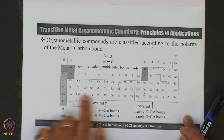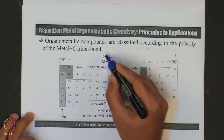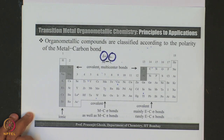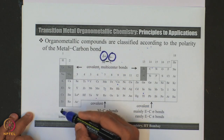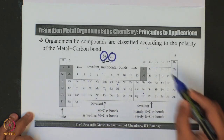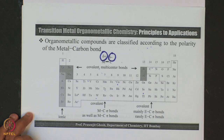Let us look at what kind of reactivity these compounds show depending on the kind of polarity they have. The best way to start is to look at the periodic table. Various elements form polar bonds with carbon, where the metal is positively charged and carbon is negatively charged. In the periodic table, we have the first group which is alkali metals, then alkaline earth metals, then a series of transition metals, then metalloids, then nonmetals, and finally the noble gases.